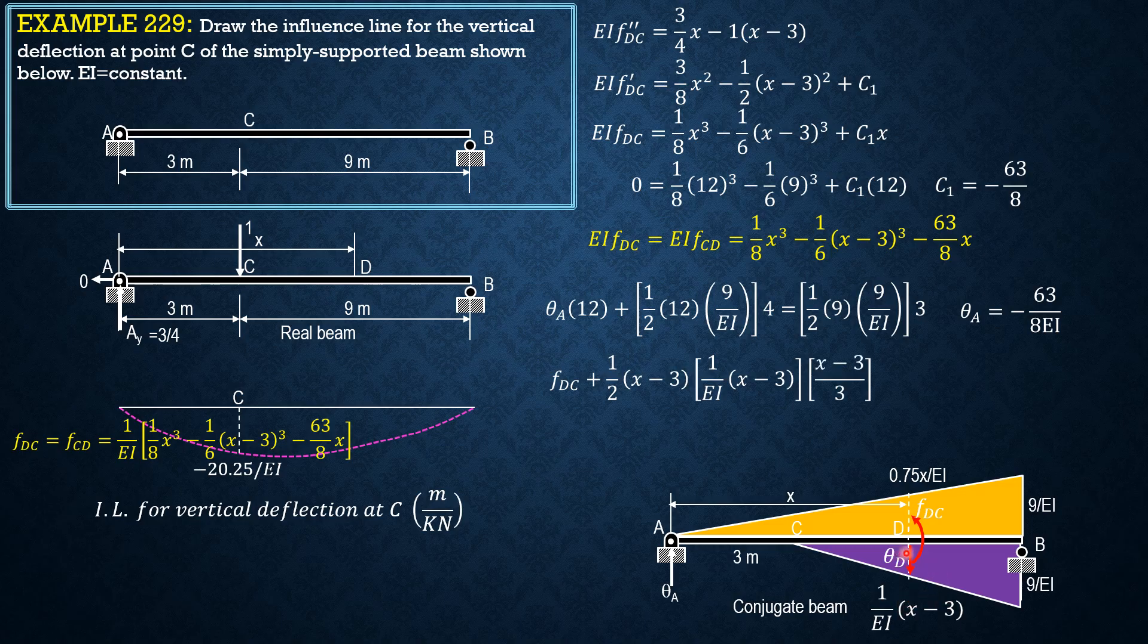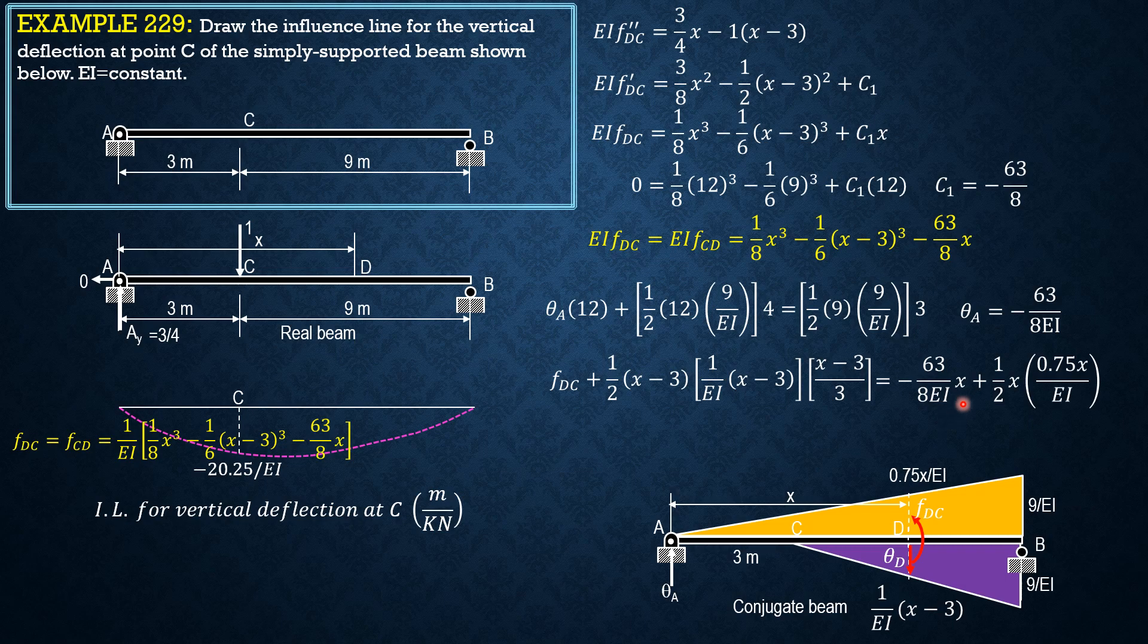Equals theta A, negative 63 over 8 EI X, plus 1 half of X times 0.75 X over EI, moment arm X over 3.